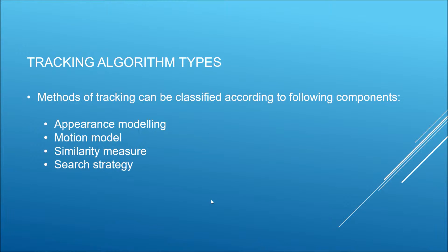Methods of tracking can be classified according to the following components: appearance modeling, where we select our region of interest by the appearance of what we want to track; motion modeling, where we track images in motion — only tracking things in motion, not static objects; similarity measure, where on consecutive frames we measure how similar the region of interest is from the previous one; and search strategy.